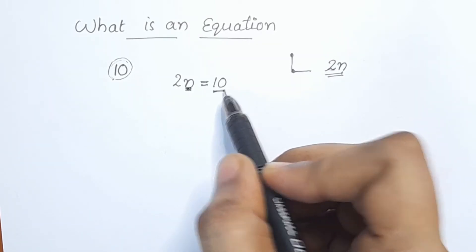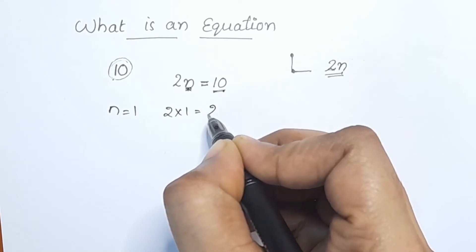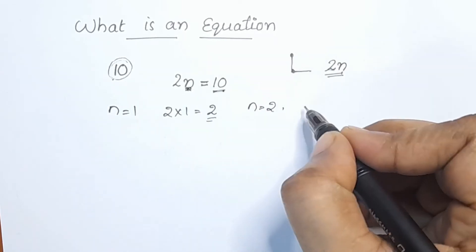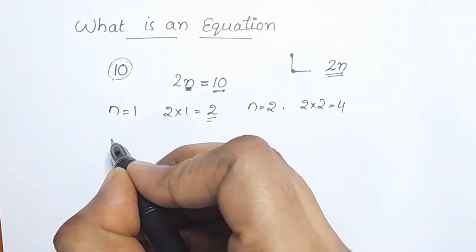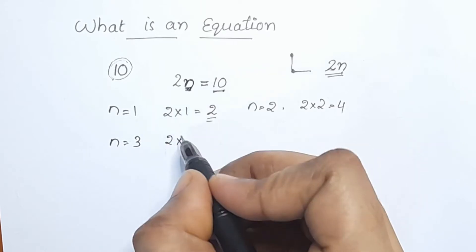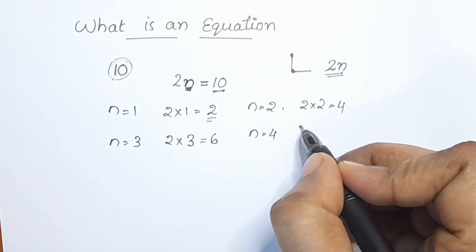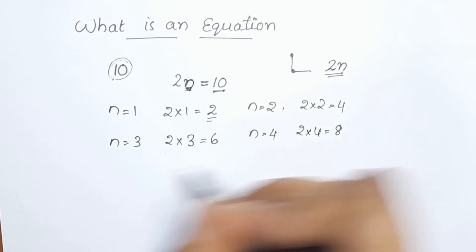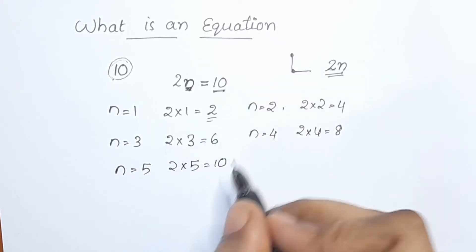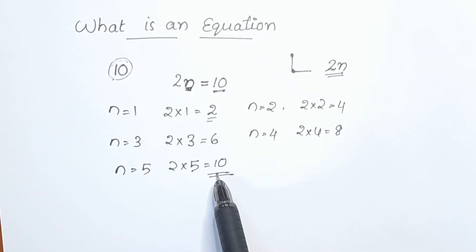We will show you the values. 2 into 1 is equal to 2. 2 into 2 is equal to 4. 3 into 2 is equal to 6. 2 into 4 is equal to 8. n is equal to 5. 2 into 5 is equal to 10. Now we have 10. How do we get 10? When n is 5, we get 10.